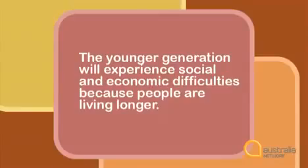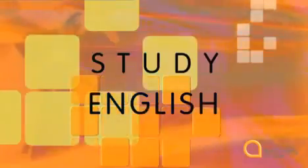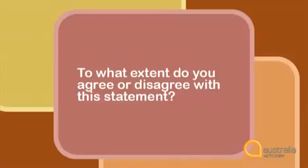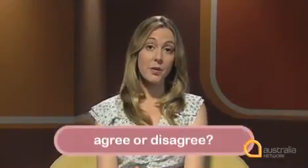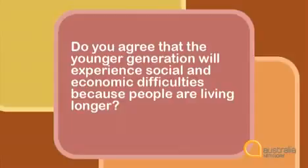So you can rephrase or paraphrase the question like this: the younger generation will experience social and economic difficulties because people are living longer. The next thing to look at is the question task: to what extent do you agree or disagree with this statement? To what extent means by how much. Here you're being asked to give your opinion about the statement. You might agree with it or you might think it is wrong. It's a good idea to reword this type of question into a yes-no question like this: do you agree that the younger generation will experience social and economic difficulties because people are living longer? Yes or no?